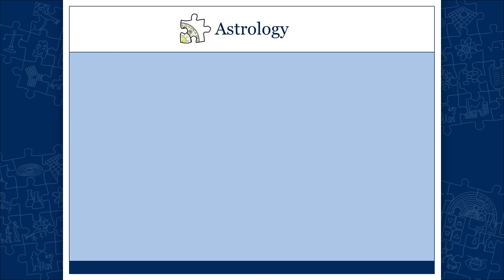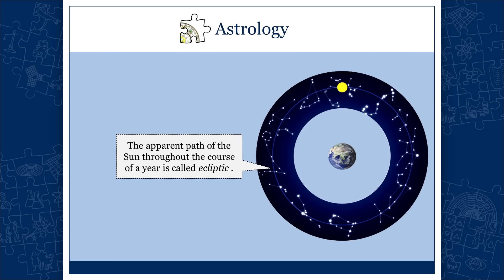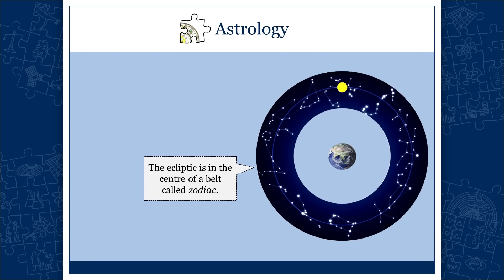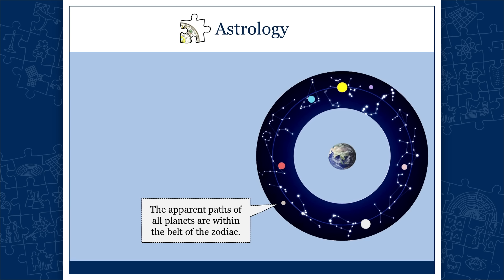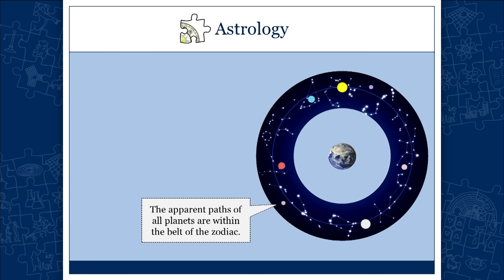Now let's go to astrology. As seen from the earth, the sun moves against the background of stars — it's an annual revolution. The apparent path of the sun through the course of a year is called the ecliptic. The ecliptic is in the center of a belt we call the zodiac. The apparent paths of all the planets are within this belt of the zodiac — all planets revolve roughly in the same plane.